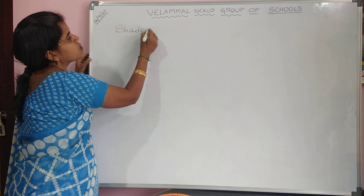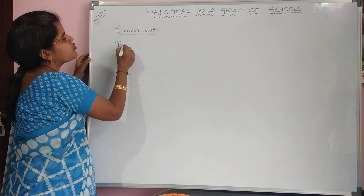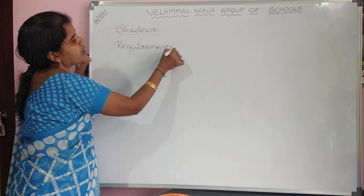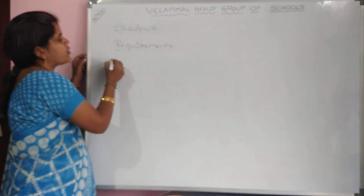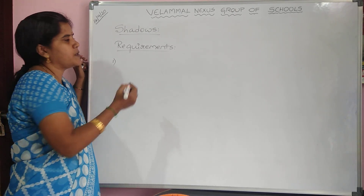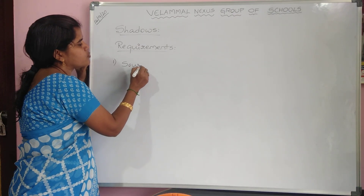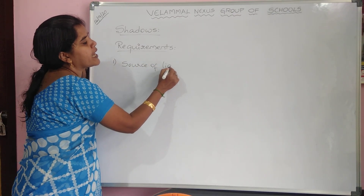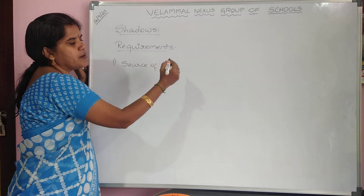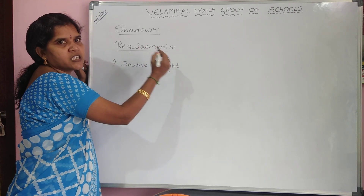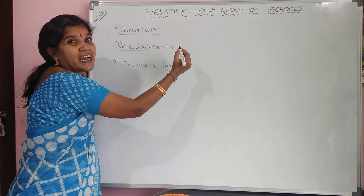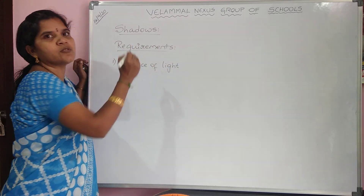What are the requirements to form a shadow? First of all, you should have a source of light. Light should fall on an object — only then you get a shadow. You can see the shadow of my hand here because light is falling on my hand. So a source of light is very compulsory.